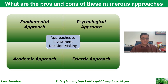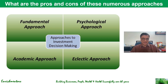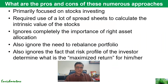We talked about the fundamental approach where you determine the intrinsic value of the asset or security, the psychological approach where you go by the mood of the public, the academic approach which requires a lot of mathematics and spreadsheets, and the eclectic approach which promises amalgamation of all three but doesn't show anything concrete to use. So what are the pros and cons of these numerous approaches?